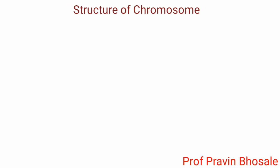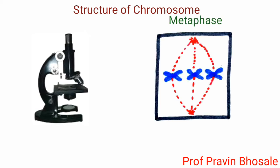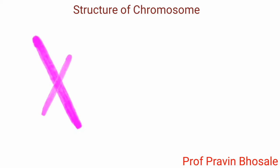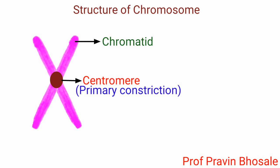The structure of a chromosome is best visible under the microscope when the cell is at metaphase stage, because at this stage chromosomes are highly condensed. A metaphase chromosome has two identical halves called chromatids, joined together at the centromere or primary constriction.